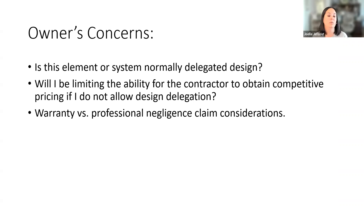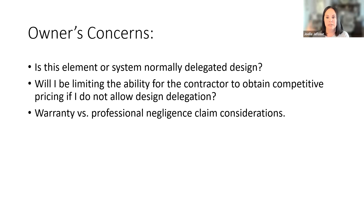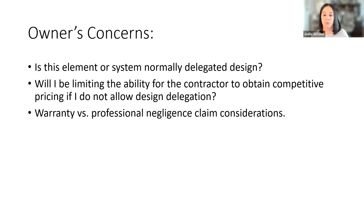An owner also needs to consider the difference between warranty claims and professional negligence claims that can arise when something is delegated. If there's a claim against a design professional, it's couched in professional liability as a professional negligence claim. But if a delegated design element has an issue, the owner needs to consider whether it's a warranty item — invoking a one-year warranty claim against the contractor — or whether to structure the claim as a professional negligence claim. There are time limitations around that, and owners should consider requiring their general contractor to carry professional liability insurance to cover delegated design items.